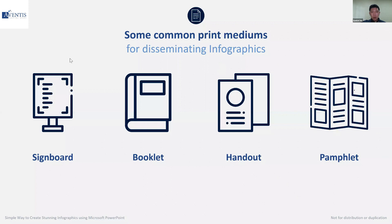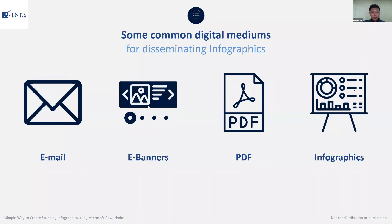Common print mediums for disseminating infographics include signboards, handouts, and pamphlets. For digital mediums, we have emails, e-banners, and you can actually create infographics for websites, social media banners, and so on. After that, presentations and PDF.